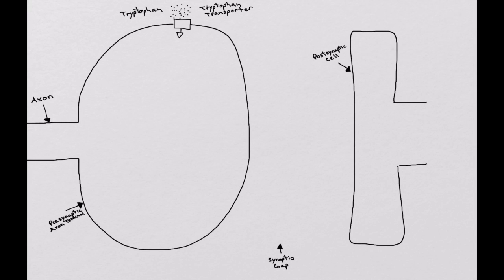We start out in the serotonergic synapse with an amino acid that we think only comes from turkey but actually comes from many different sources, and that's tryptophan. Tryptophan is in our diet and it is brought into the body through our food and transported from the extracellular space into the cytoplasm of the presynaptic axon terminal through the tryptophan transporter. Once tryptophan makes its way into the cytoplasm of the presynaptic cell, it is broken down by tryptophan hydroxylase into 5-hydroxytryptophan.